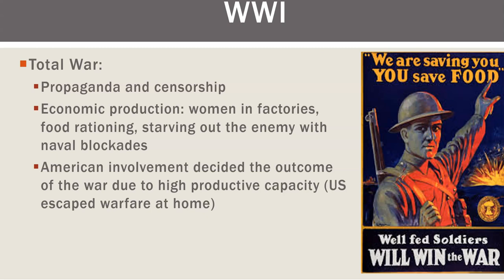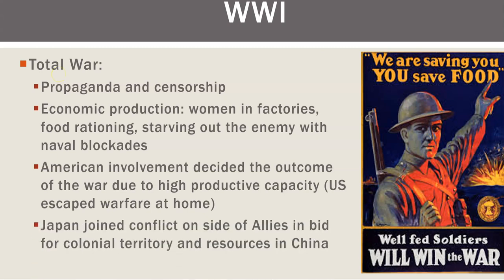The Americans got into the war for two reasons. Number one, the Germans sink the Lusitania — the Americans complain, and the Germans promise to restrict their submarines. But in 1917, when the Russians drop out, the German Admiralty tells the Kaiser: let us sink whatever we want and we'll get England and France to drop out of the war. This unrestricted submarine warfare greatly angers Woodrow Wilson. The second reason — about 10% of it — is the Zimmermann Telegram, where the Germans send a telegram to Mexico trying to get Mexico to attack the U.S.